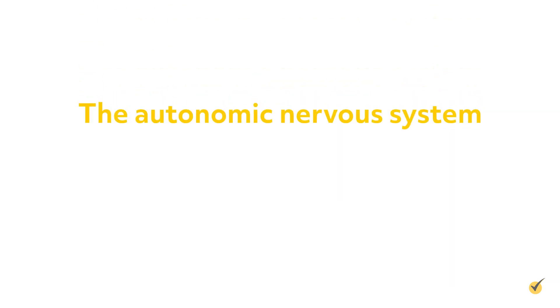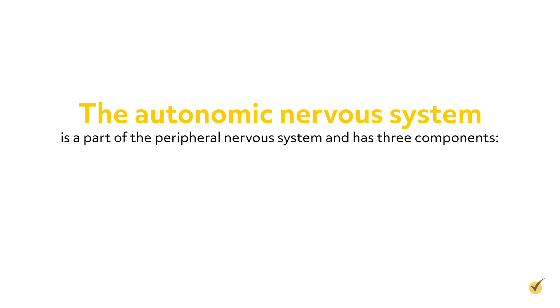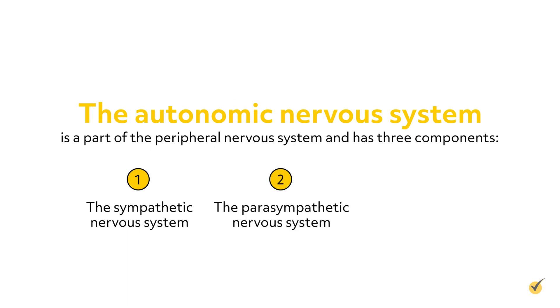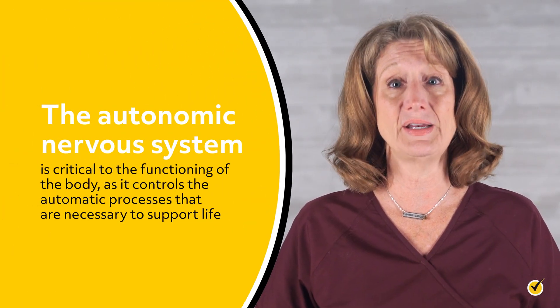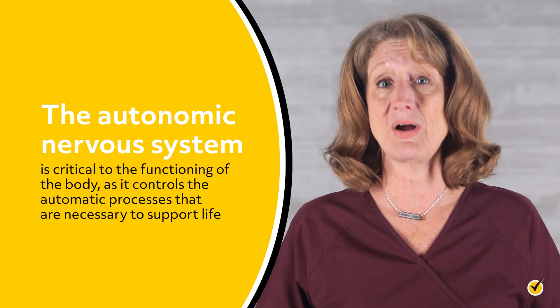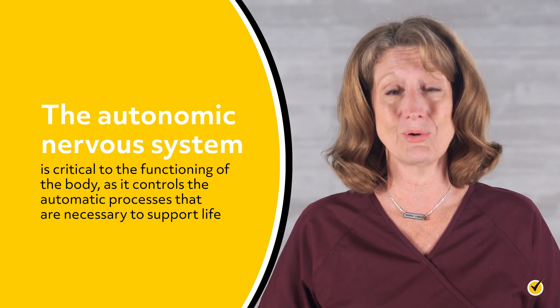In conclusion, remember that the autonomic nervous system is a part of the peripheral nervous system and has three components: the sympathetic nervous system, the parasympathetic nervous system, and the enteric nervous system. The autonomic nervous system is critical to the functioning of the body as it controls the automatic processes that are necessary to support life. Thanks for watching and happy studying!